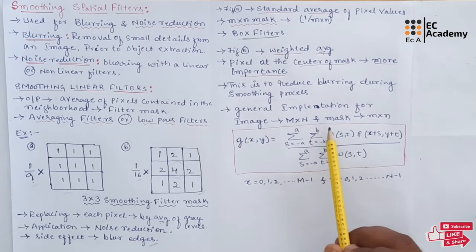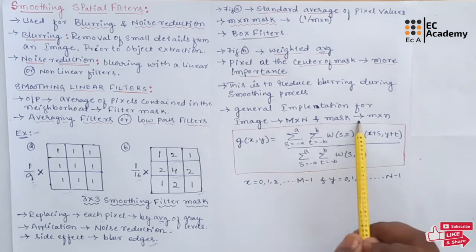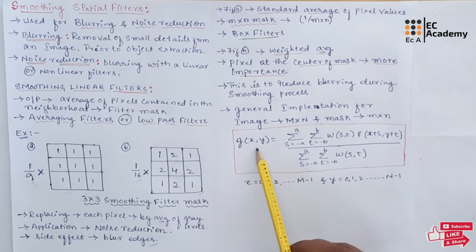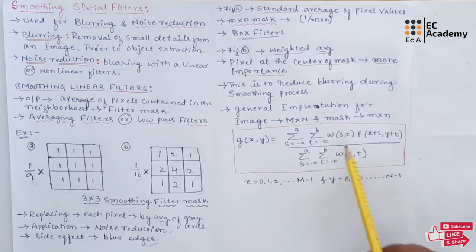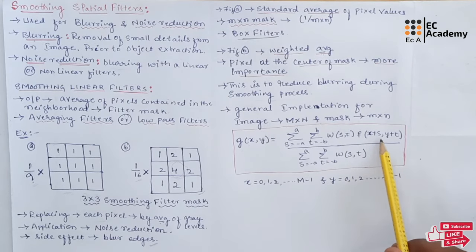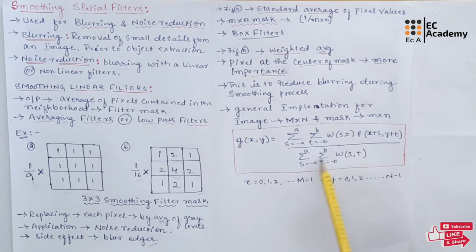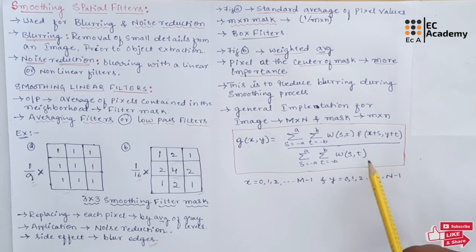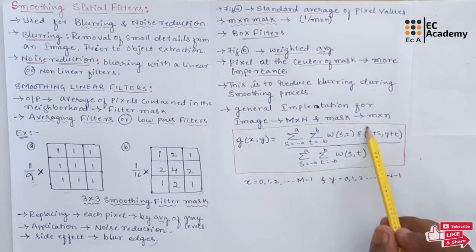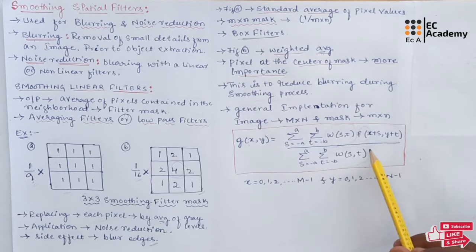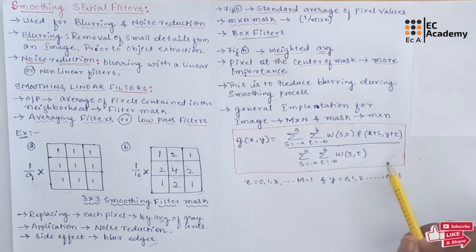The general implementation for filter with image m cross n and mask small m cross small n is given as g of x comma y is equal to summation of s is equal to minus a to a summation of t is equal to minus b to b w of s comma t into f of x plus s comma y plus t divided by summation of s is equal to minus a to a summation of t is equal to minus b to b w of s comma t. So here w of s comma t represents the coefficients of filter and f represents the coefficients of the image grey levels. Since you are dividing with the coefficients of filter mask, you will get the average value or you will get the average filters.